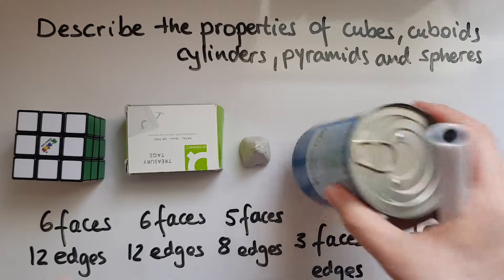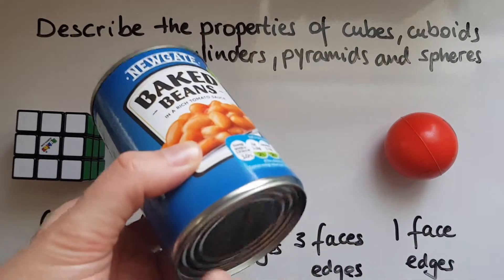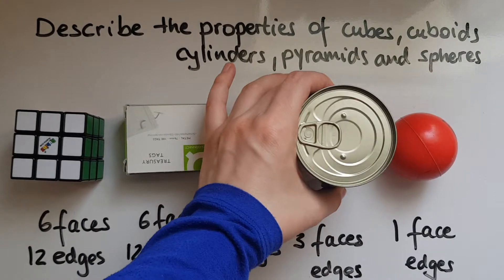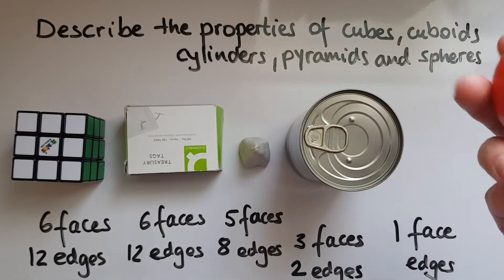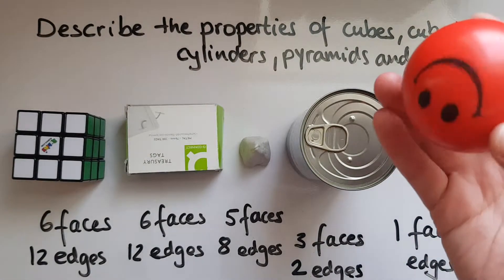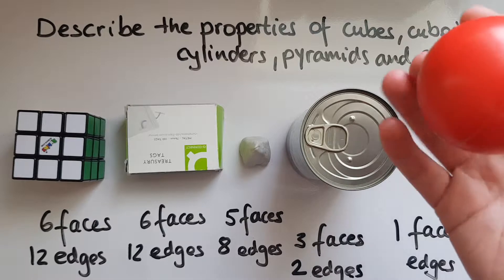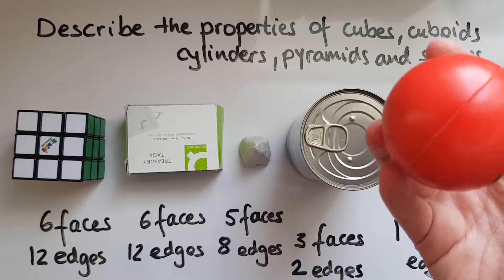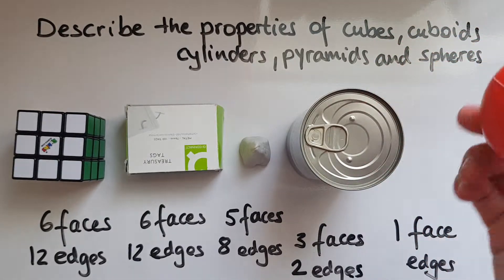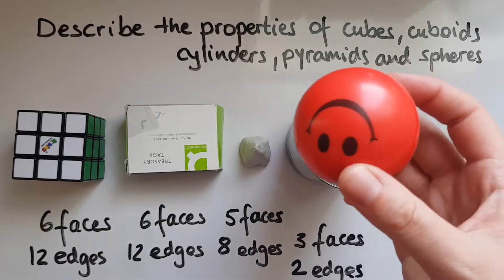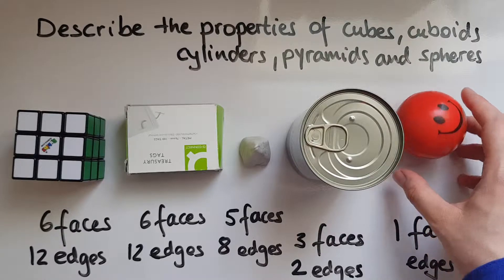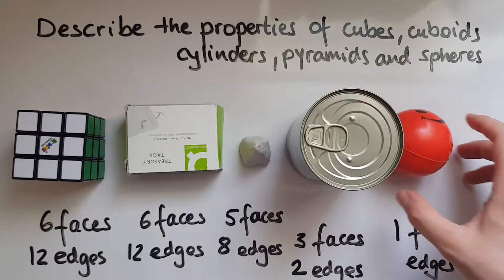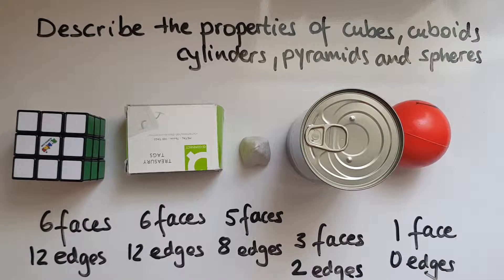In a cylinder we've got one and two circular edges. How about the sphere? As I said, there is one face that goes around that you can see, so there cannot be two faces meeting together. Therefore there are zero edges, or no edges.